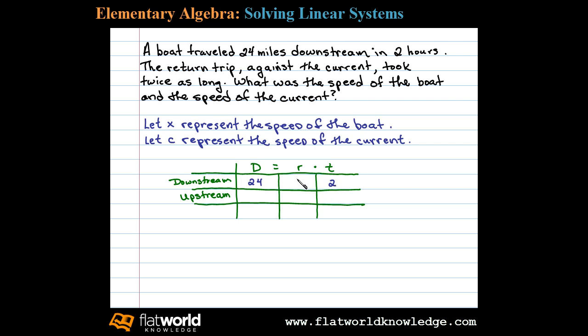Now the average speed of the boat downstream is the speed of the boat plus the current. The average speed of the boat on the return trip against the current then would be the speed of the boat minus C.